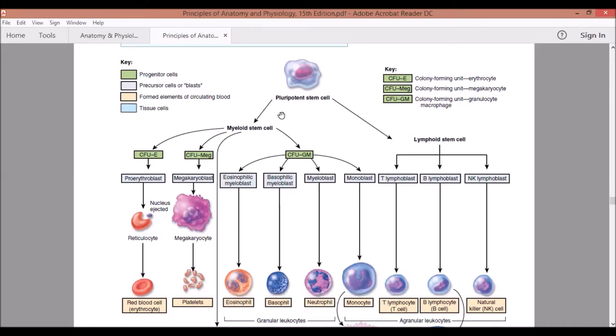Now it has two major lineages: myeloid stem cells and lymphoid stem cells. For myeloid stem cells, as we observe from the leftmost, you have your colony forming units before it could actually become your blasts.